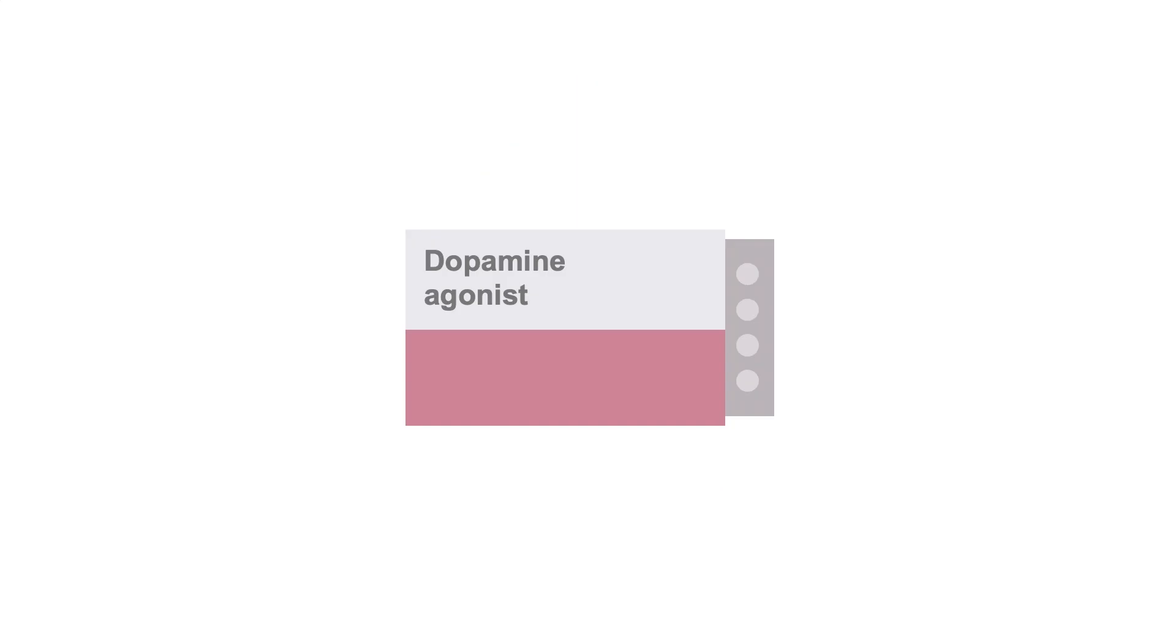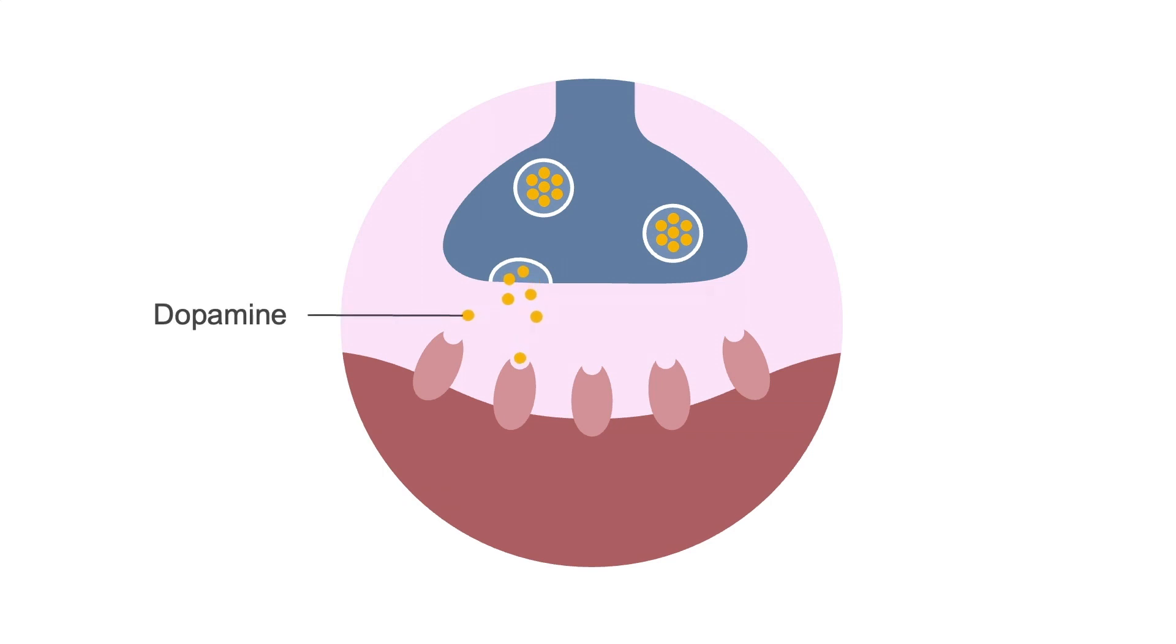Another first-line therapy is dopamine agonists. Just like how dopamine released into the synapse activates dopamine receptors, these agonists mimic dopamine when they turn on the dopamine receptor.